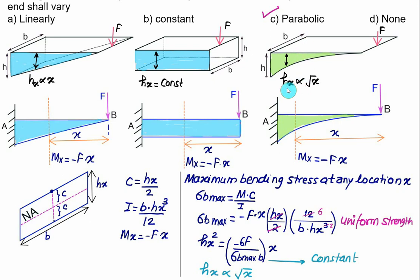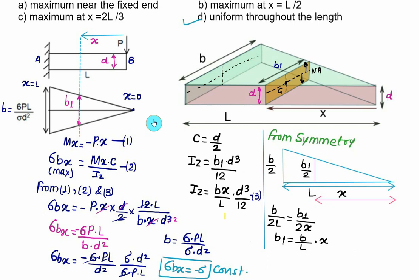So when the width is constant, the depth is proportional to √x for uniform strength in a cantilever beam with a point load at the free end. Conversely, in the same cantilever if the depth d is constant, then the breadth must vary linearly from b to 0 over a length L — again for the condition of uniform strength.